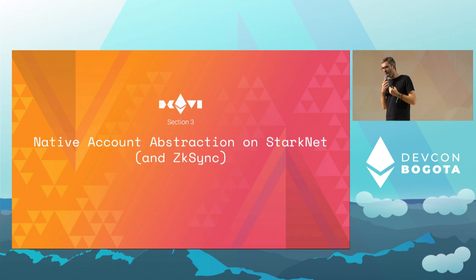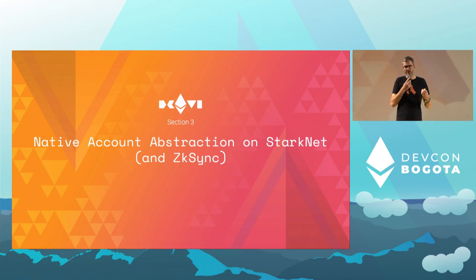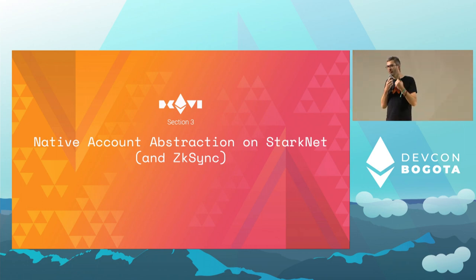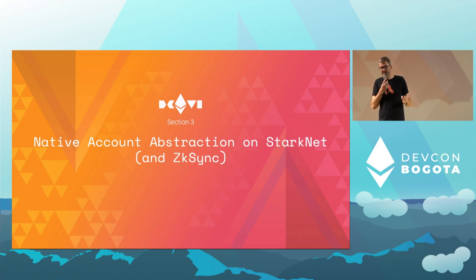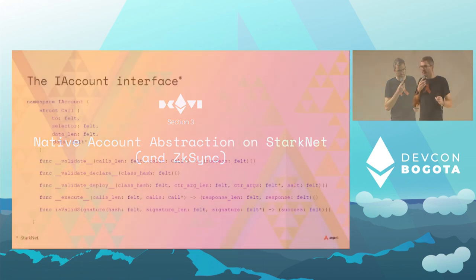That's why we've been really excited lately: two of the major layer two providers — StarkNet and zkSync — have committed to shipping with native account abstraction. At Argent we've been working with them closely for the past year, bringing our experience as a smart contract wallet company to make sure we design account abstraction the right way for users and for the next wave of users. In the remaining talk I'll focus on StarkNet, but everything I say applies to zkSync as well.